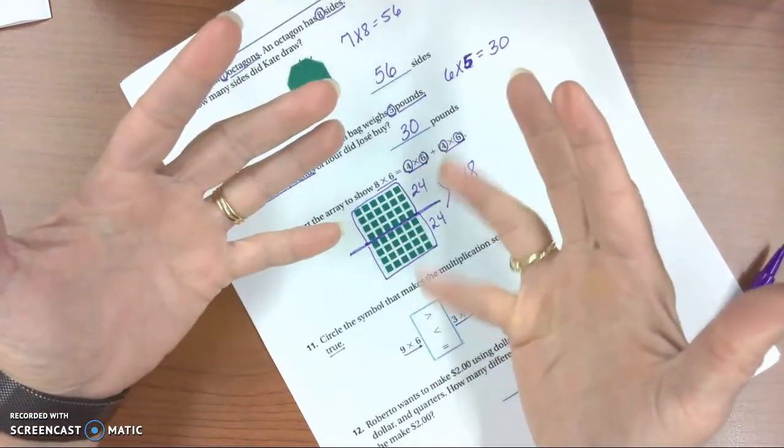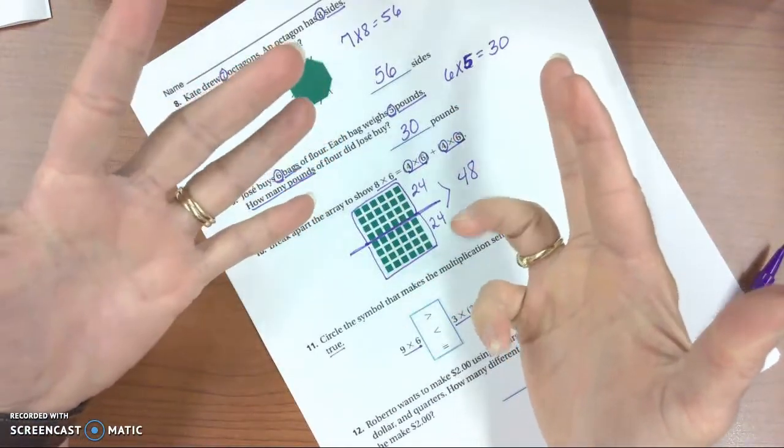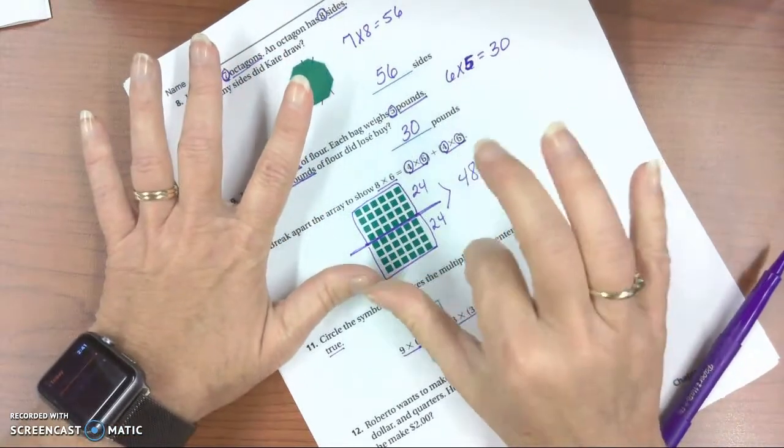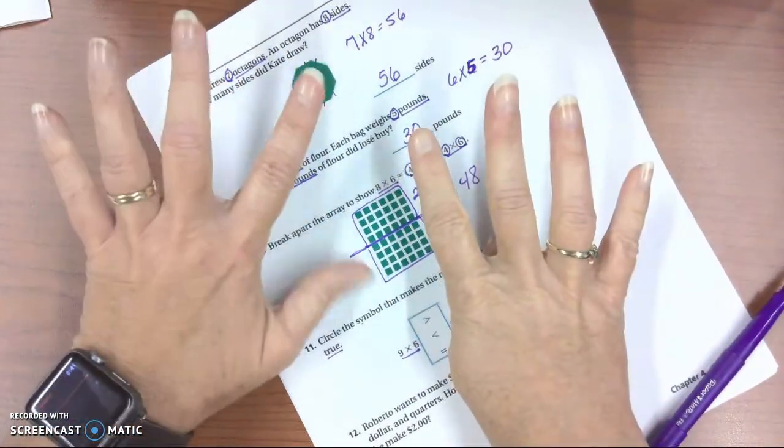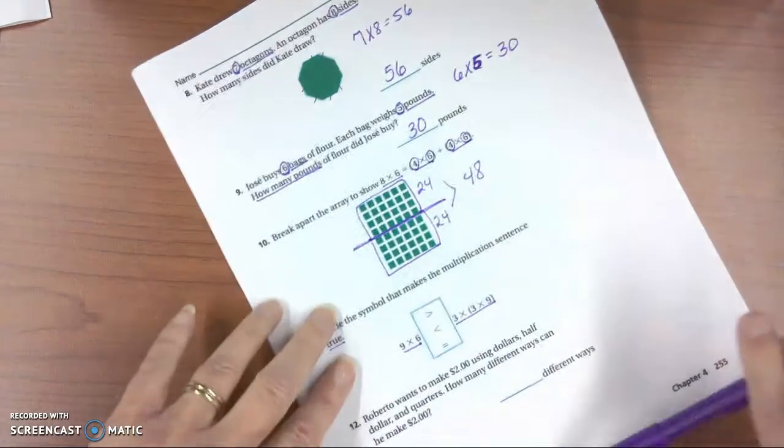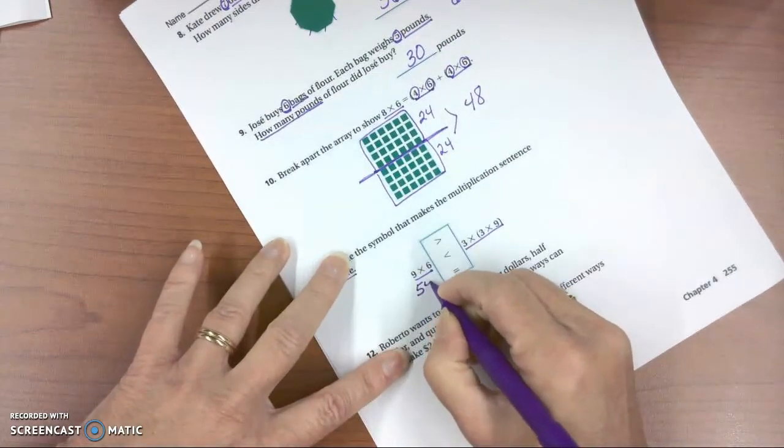whether you do the 9 times 6 on your fingers, and you hold that down and you get 54 that way. I always did it this way. 9 times 6 is 54. Or you just know that in your head. 9 times 6 is 54.